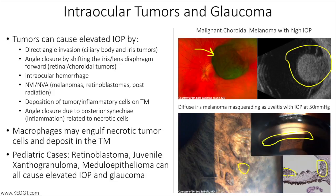Proper diagnosis starts with a detailed history, including questions about systemic malignancies. Slit-lamp exam is important with emphasis on gonioscopy and dilated fundus exam, as well as advanced imaging with ultrasound, including ultrasound biomicroscopy, optical coherence tomography, and fluorescein angiography when appropriate.